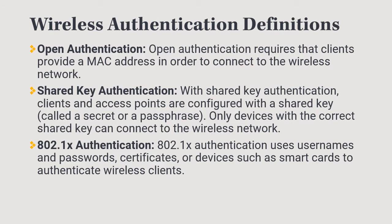Now we're going to talk about wireless authentication — that's where we ask a device to identify itself and check that it's supposed to be connected to our network before we allow it to transmit and receive. The first is open authentication, which simply requires a MAC address. We set up authentication based on MAC addresses we want to exclude or include, but this isn't a very secure method because MAC addresses can be spoofed.